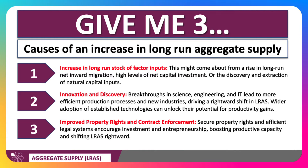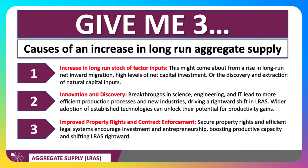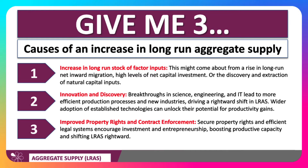A third factor affecting aggregate supply in the long run is improved property rights and contract enforcement. This is a particularly important area of economics. The ability of firms and people to make breakthroughs in new technology, to patent new ideas, to start businesses and earn a return depends in part on the legal system of a country. Secure property rights and efficient legal systems are often thought of as encouraging investment and entrepreneurship, and in the long run, this boosts productive capacity and should shift aggregate supply to the right.